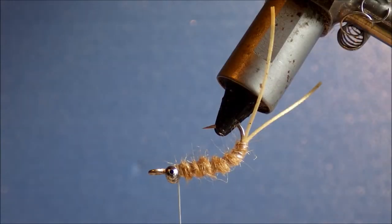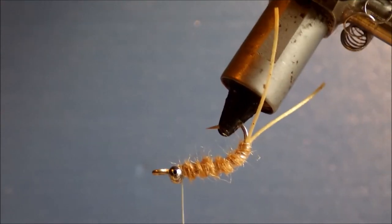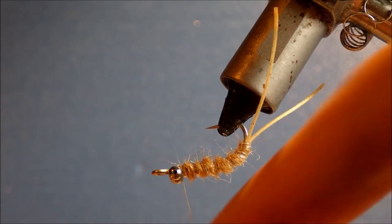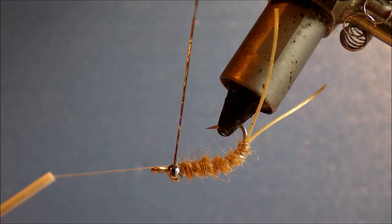So next you're going to tie in just a little bit of sparkle. For this I use Golden Olive Crystal Flash. Just one strand is enough. If you feel that you want a bit more you can use two, but I just like a couple. Again the skinny water keep it a bit more subtle.